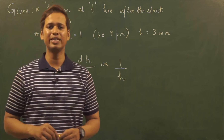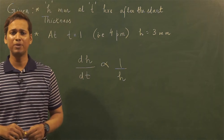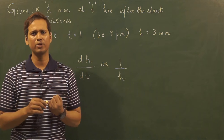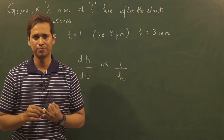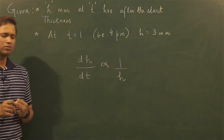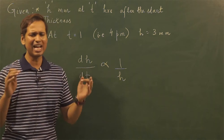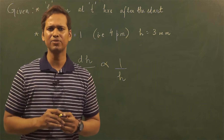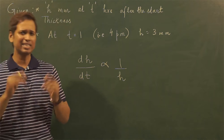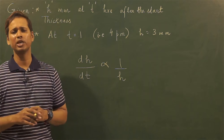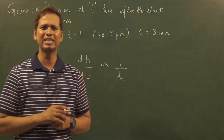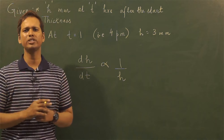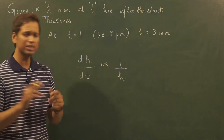In this question we are testing you on the application of differential equations — specifically on two fronts: how you can frame a differential equation and how you can solve it. The given question states that freezing is happening on a lake, and the increase in height or thickness of the ice formed on the lake with respect to time is inversely proportional to the thickness of the ice at that instant of time. The first part asks us to form the differential equation representing this physical condition.